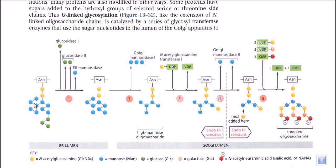This chain of saccharides is further modified by different enzymes inside the Golgi apparatus to finally make a complex structure. So the final model we have is a complex oligosaccharide linked with the protein backbone. This is the simple form of the protein attached with the oligosaccharide chain, and inside the Golgi this whole system is going on.